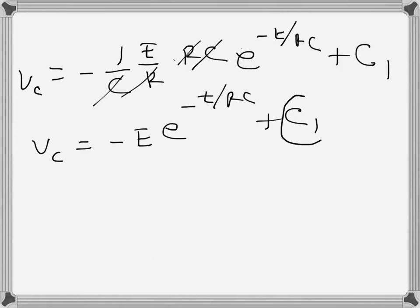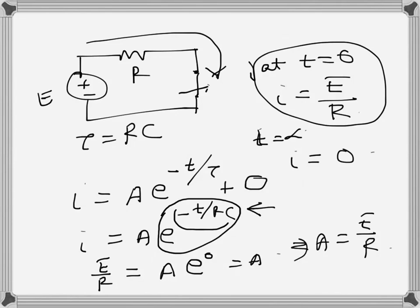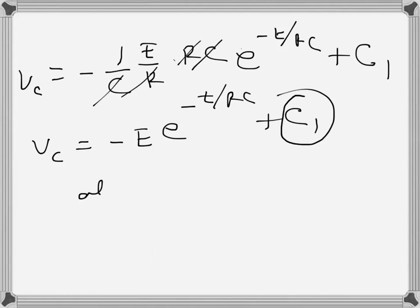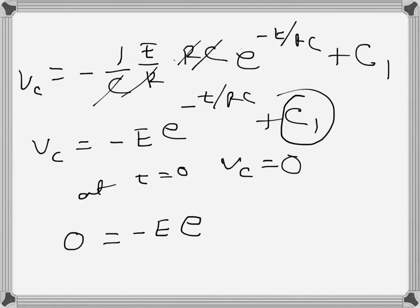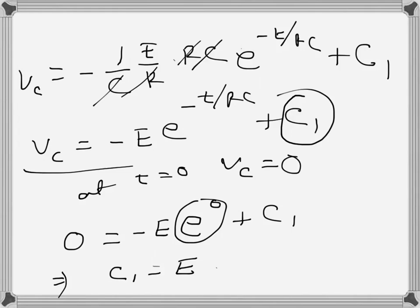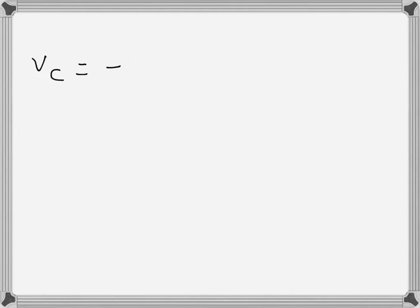We find the integration constant using the boundary condition: immediately after the switch closes the capacitor is a short circuit, so the voltage across it at t equals zero is zero. Plugging in t equals zero, the exponential term becomes one, so zero equals negative E plus C1, giving C1 equals E.